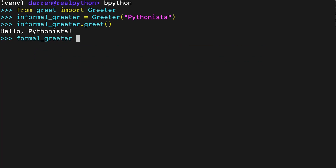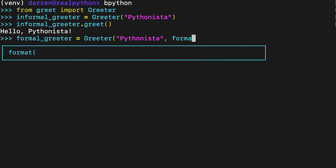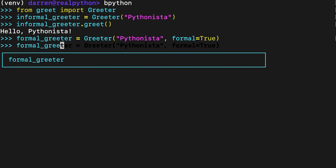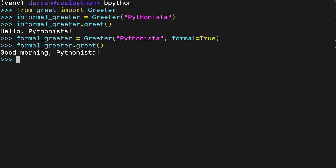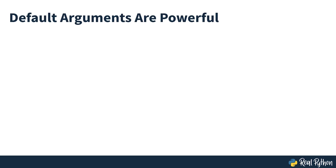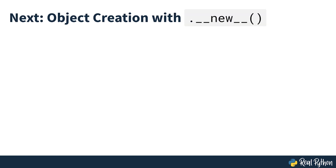In this example, you use a name and a formal argument to instantiate Greeter. Because formal is True, the result of calling greet() is a formal greeting. Even though this is a toy example, it showcases how default argument values are a powerful Python feature that you can use to write flexible initializers for your classes, allowing you to instantiate them using different sets of arguments depending on your needs. Now that you know the basics of the __init__ special method and the object initialization step, it's time to change gears and start diving deeper into __new__ and the object creation step.